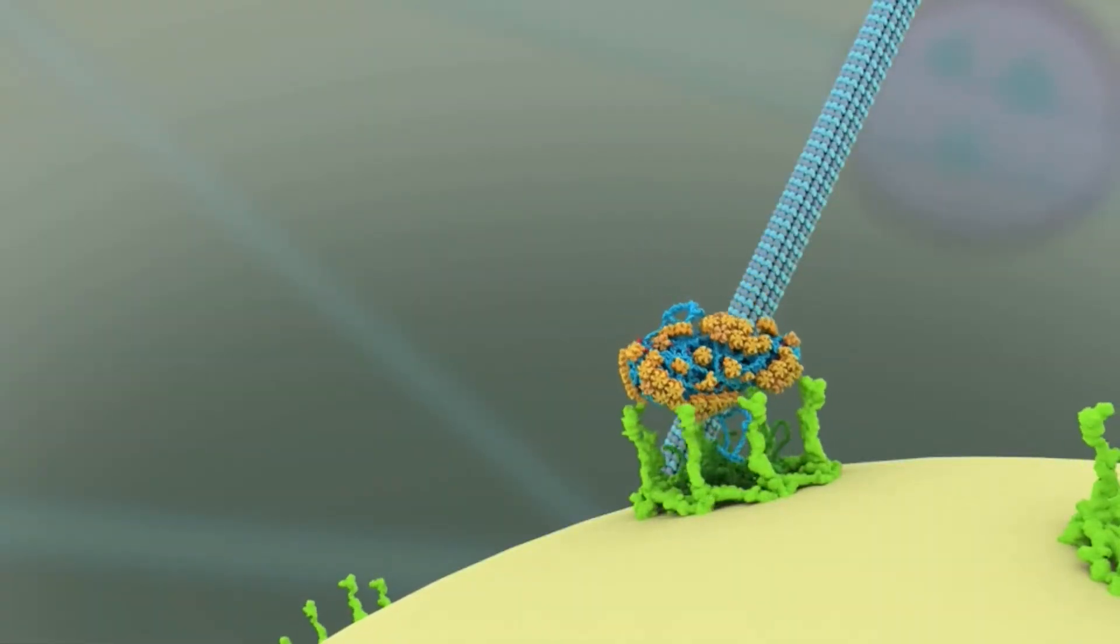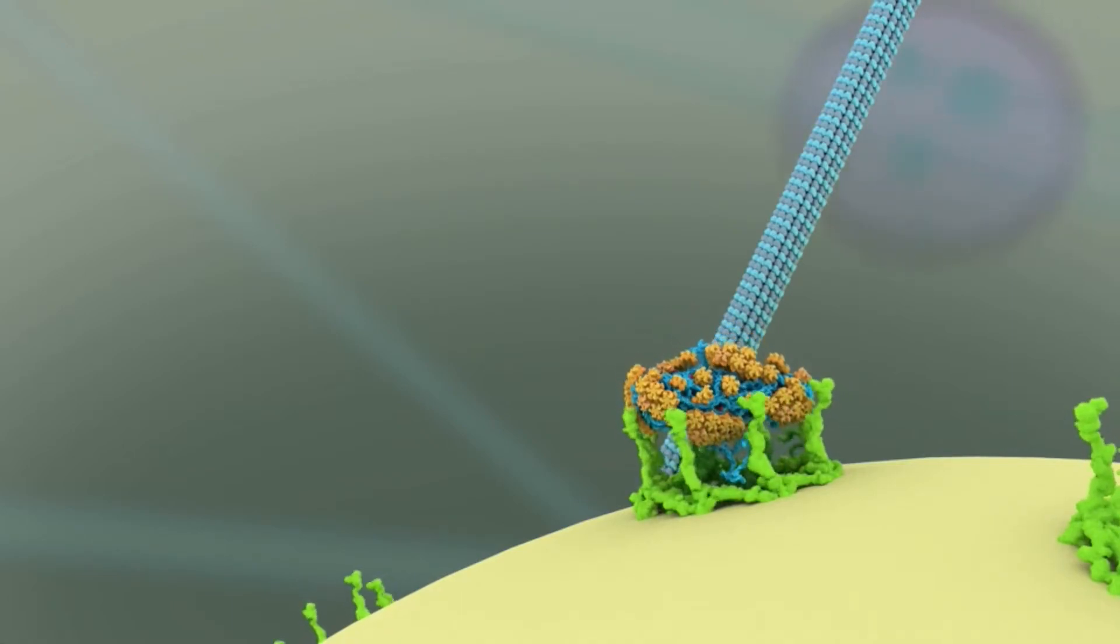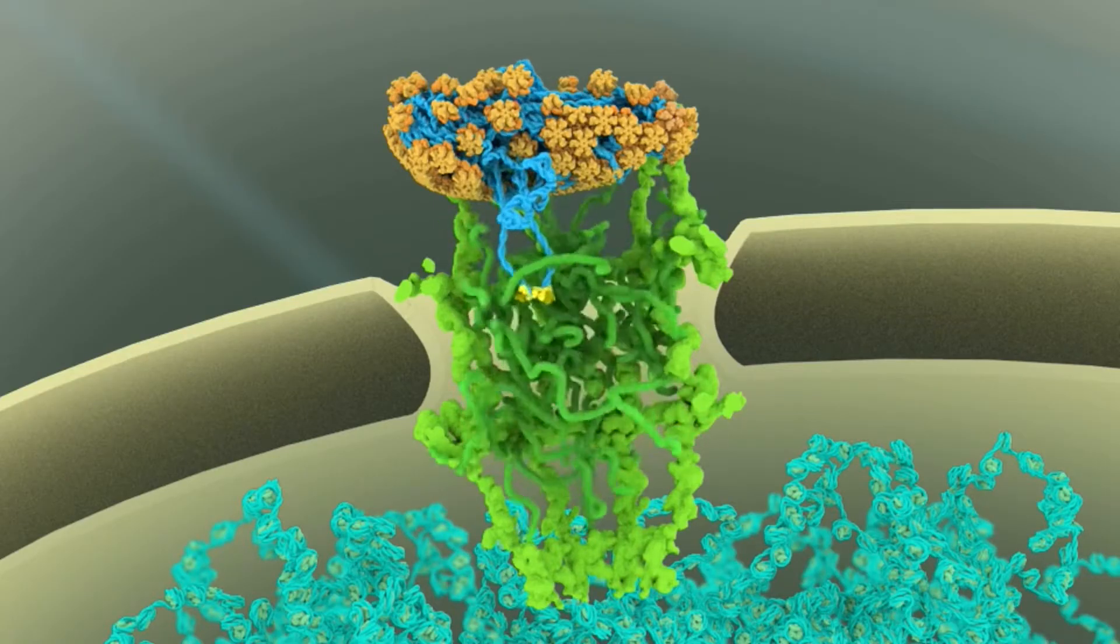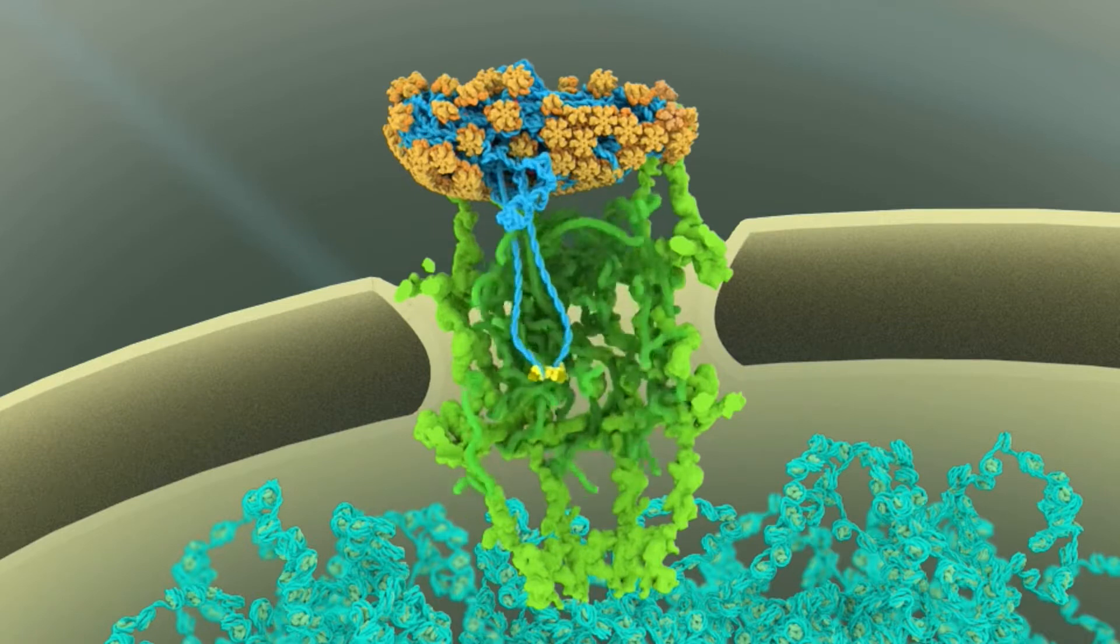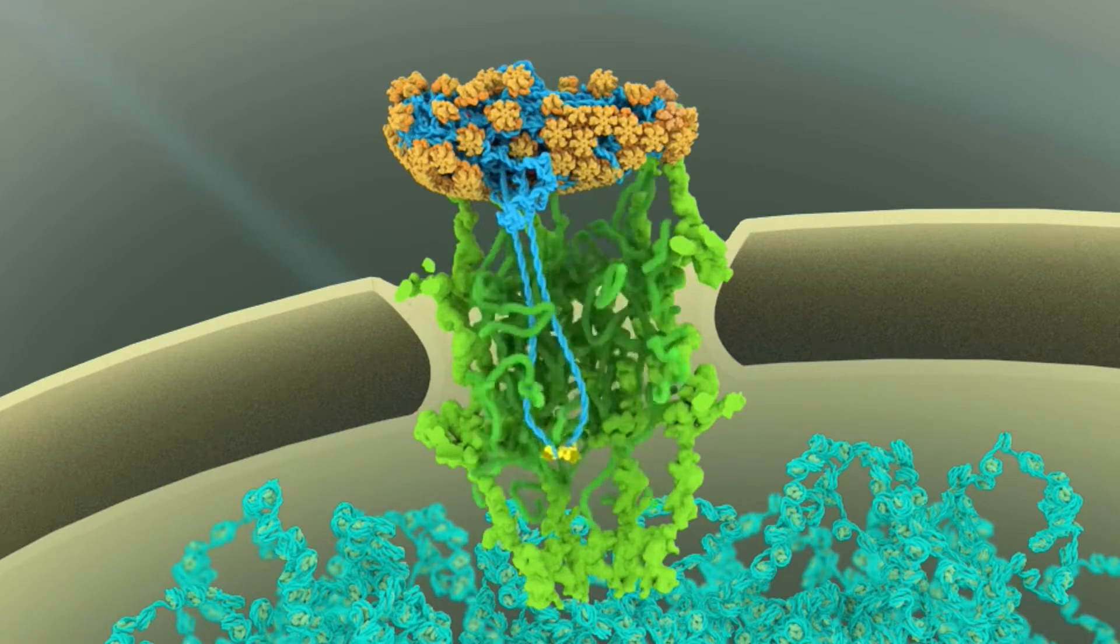The viral genome has now reached the nucleus. A segment of the viral DNA, bound by the viral protein integrase, shown in yellow, starts to make its way across the nuclear pore.